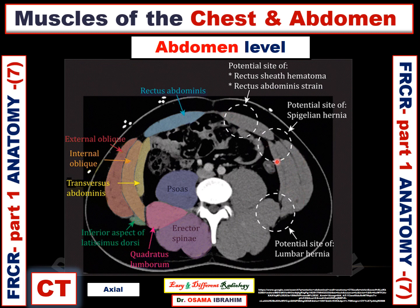Laterally there are three muscles. The most lateral one is the external oblique, next one is the internal oblique, and the most internal one is the transverse abdominis muscle as shown here in color. Between the rectus abdominis muscle and these three muscles there is another line called linea semilunaris.